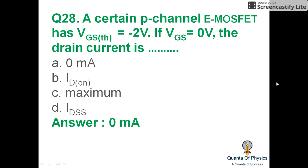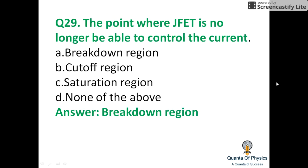A certain P-channel E-MOSFET has a threshold voltage VGS(th) of minus 2V. If VGS is equal to 0V, the drain current is simply 0A because the threshold voltage is minus 2V and the device is not turned on. The point where a JFET is no longer able to control the current is called the breakdown region of the FET.